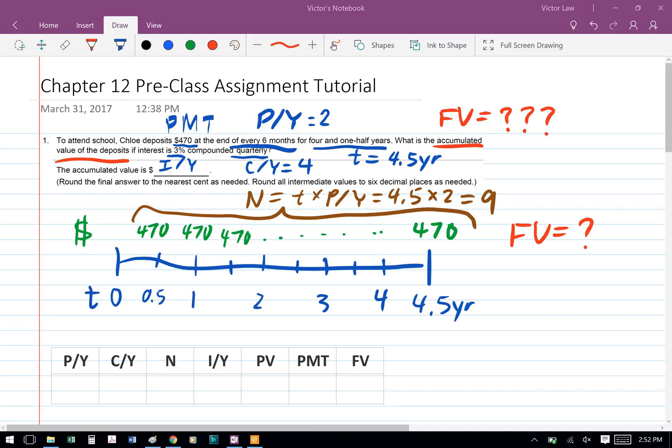From a timeline perspective, we're making a payment of $470 every six months, and there are nine payments in total. We're solving for the future value of those nine payments.